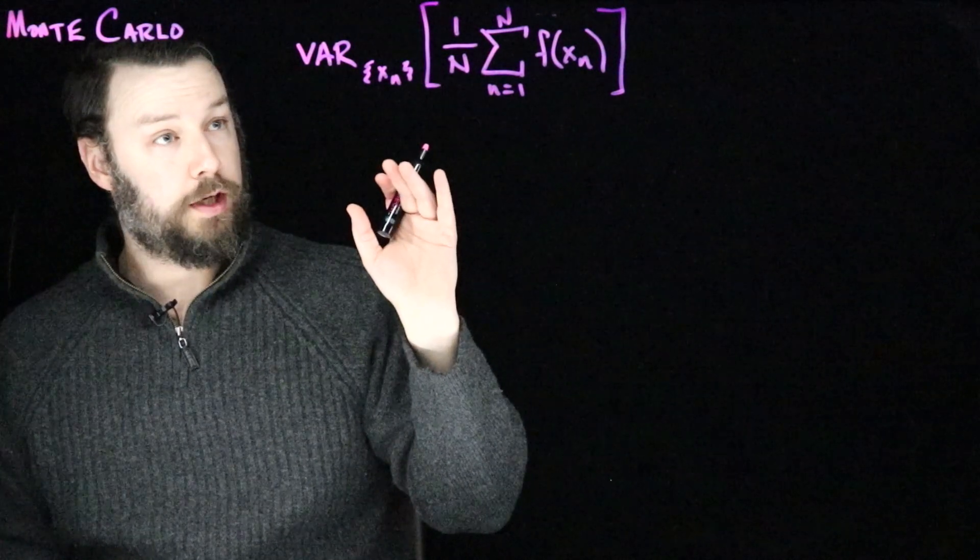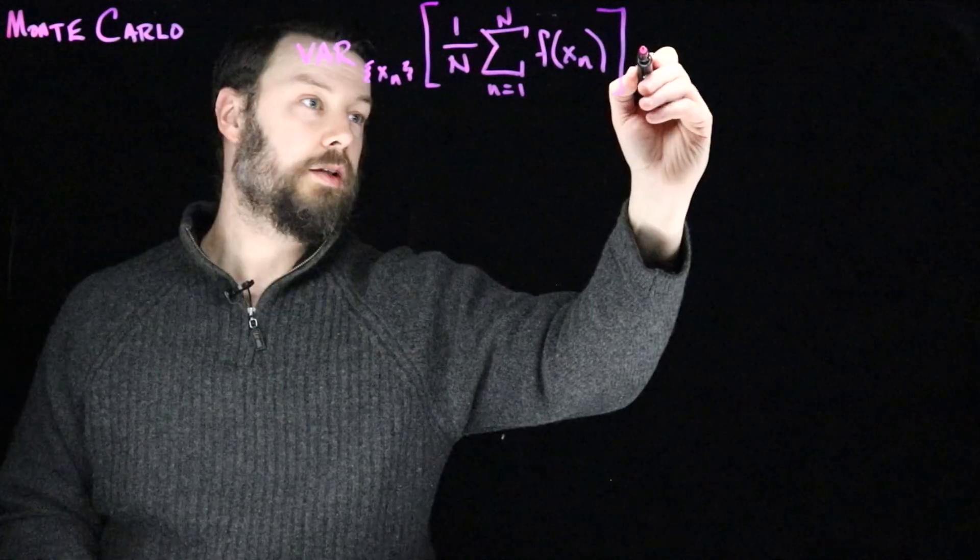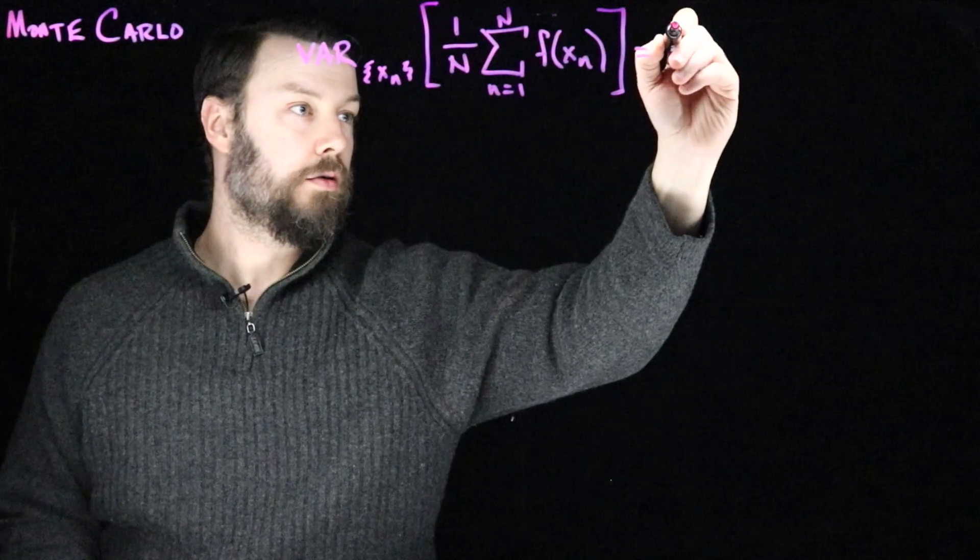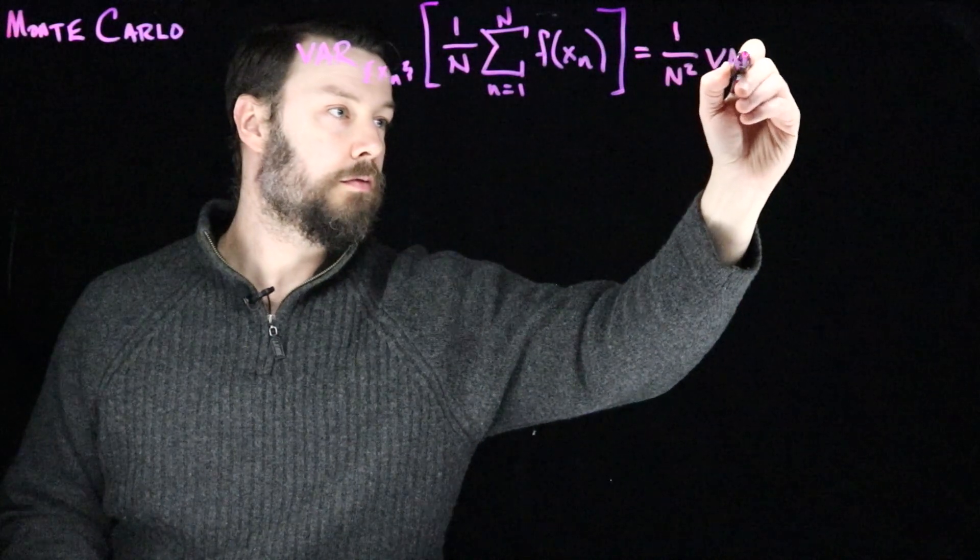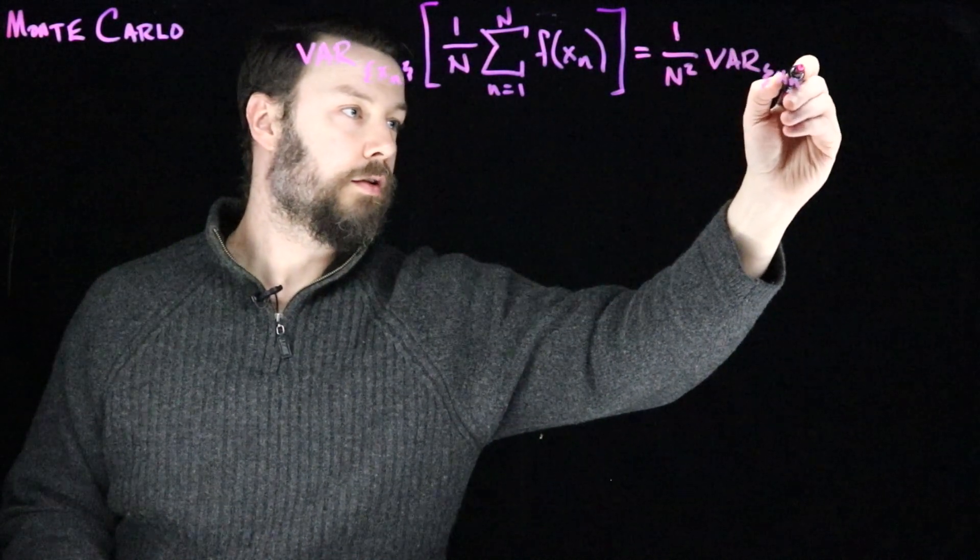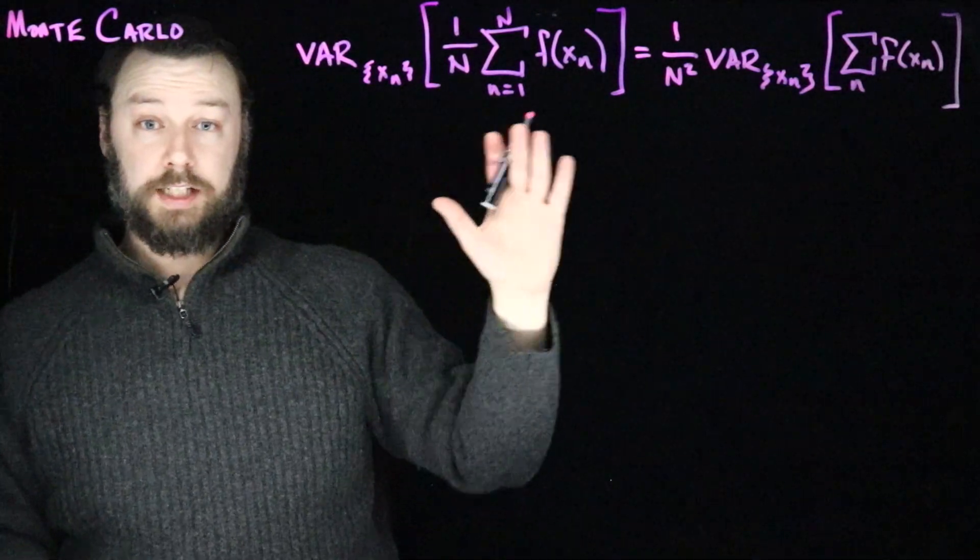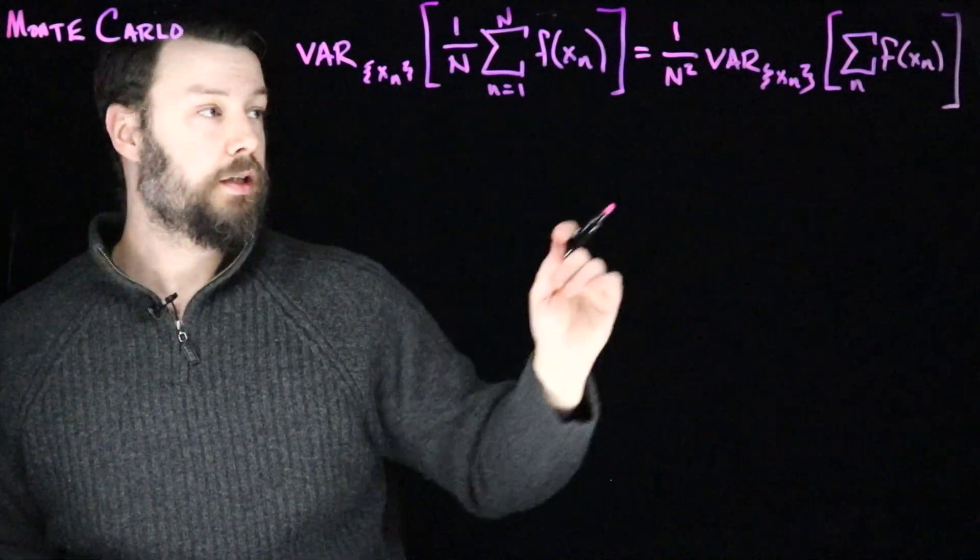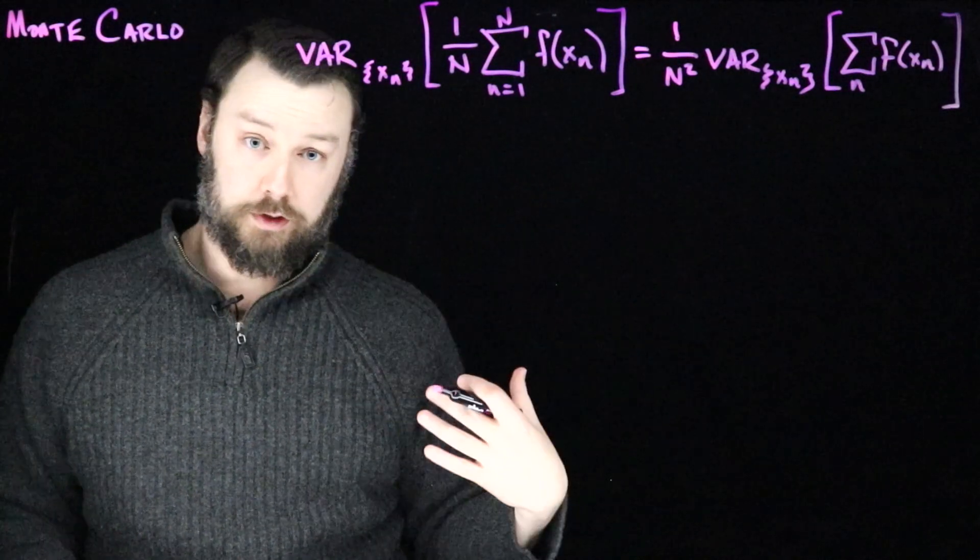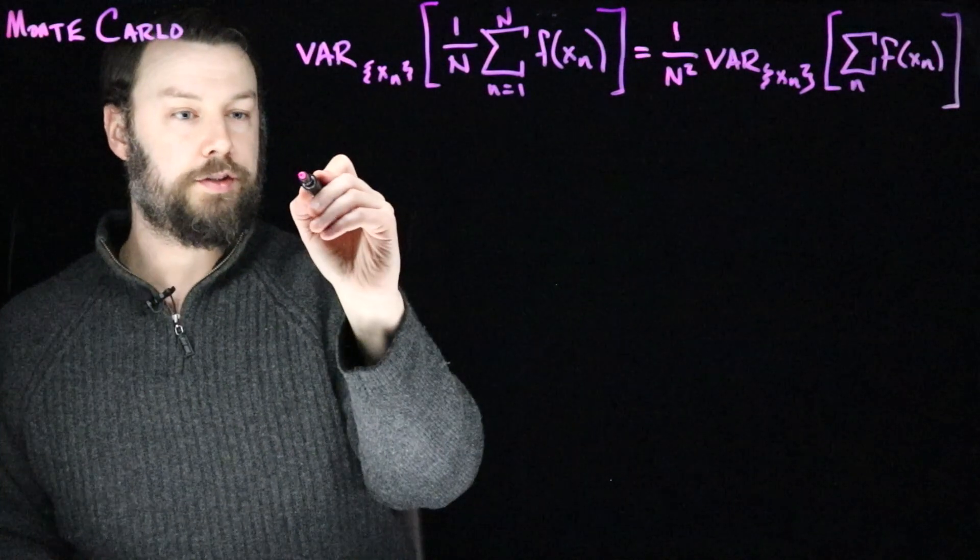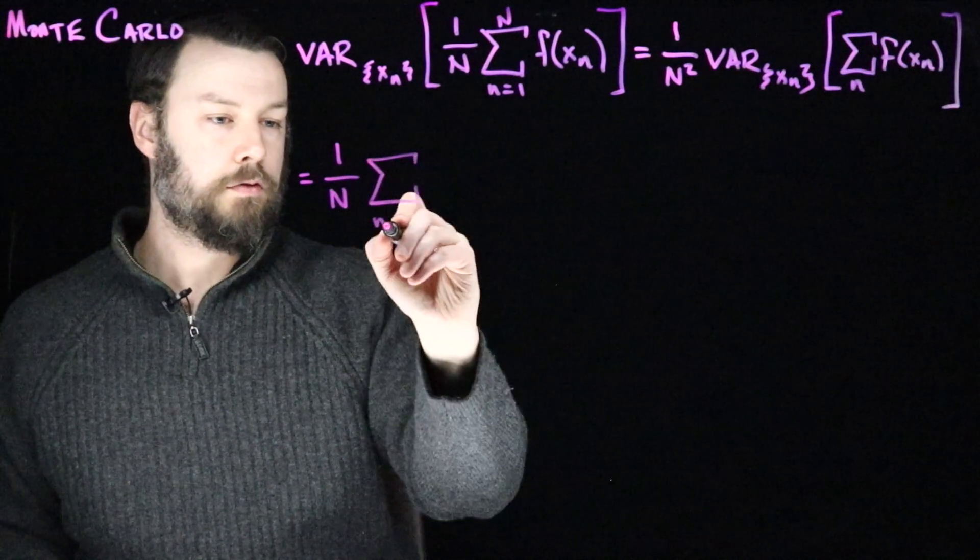The very first thing to notice is that there's this constant 1 over n. Now, whenever we talk about the variance of a random quantity multiplied by constant, that constant can come outside the variance, but it comes outside as the square. That means I can write this as 1 over n squared, multiplied by the variance, still over that collection, but now over the sum only. I've taken these to be independent variables xn. And so when I have independent things, and I ask about their variance, then it's going to be the sum of their individual variances. So that's good news.